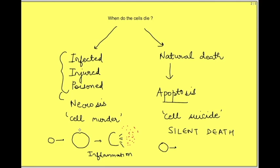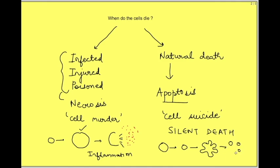Morphologically, in apoptosis the cell shrinks in size instead of swelling. The cell shrinks, condenses, and starts getting fragmented, forming small particles or blebs. These blebs start falling off — in fact, apoptosis literally means 'falling off.' The cell membrane and its contents fall off as small particles or blebs which are phagocytosed by macrophages.